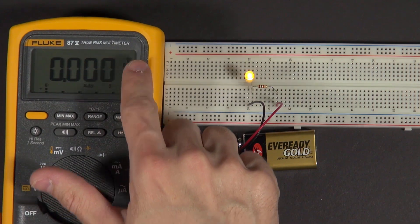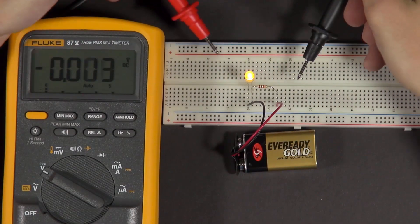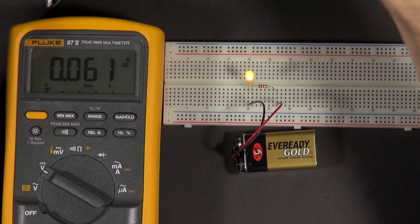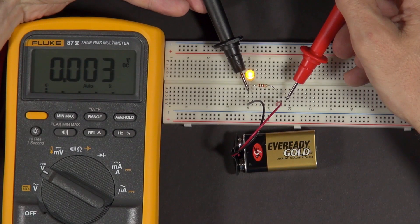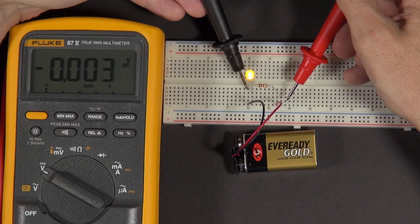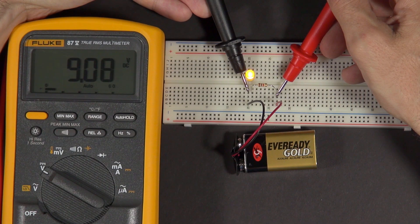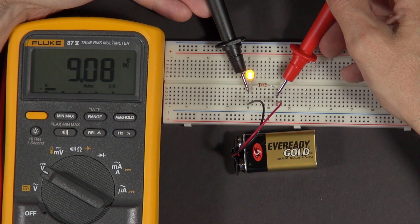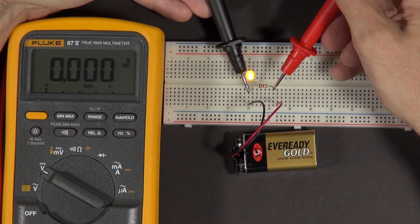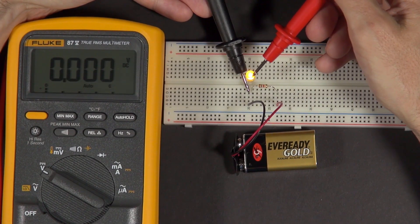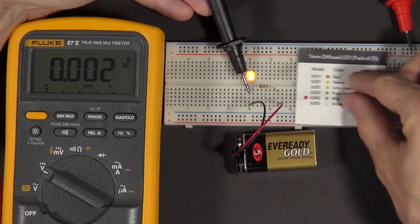First what I'll do is I'll measure the voltage across the entire circuit, from where the negative terminal is coming in from the battery to the positive terminal. You see it says it's about nine volts, which makes sense because we have a nine volt battery.